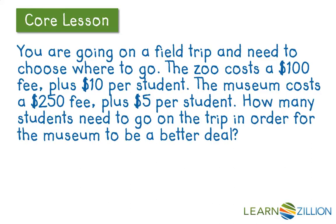In this word problem we need to pull out our pertinent information. We need to know the costs. We want to set up an inequality so that the museum cost is less than the zoo cost. First, we write an expression for the museum cost: $250 plus $5 per student.